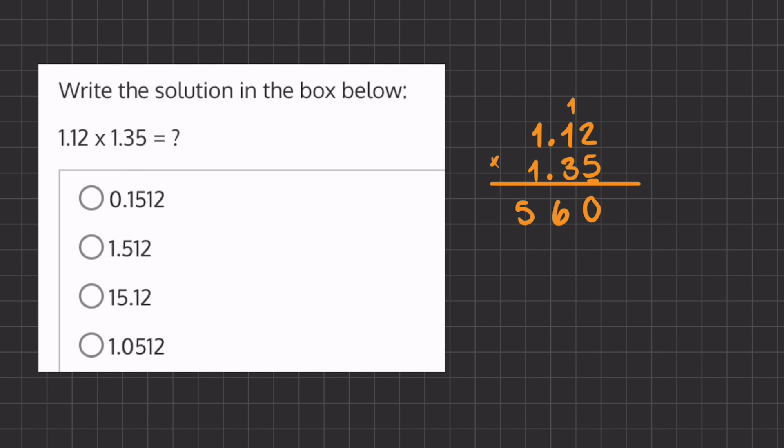Now we can erase the numbers that we carried over and move on to our next column, 3, and multiply by all the numbers above. And we're also going to place one placeholder under the 1's place because we moved one column over. So now we have 3 times 2, which is 6, 3 times 1, which is 3, and 3 times 1, which is also 3.